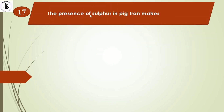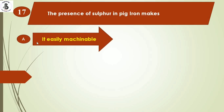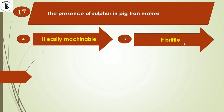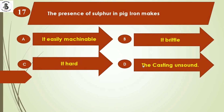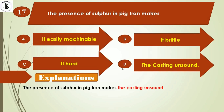The next question: the presence of sulfur in pig iron makes option A) it easily machinable, option B) it brittle, option C) it hard, option D) the casting unsound. The presence of sulfur in pig iron makes the casting unsound. The right answer is option D.